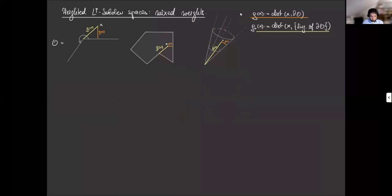And what we came up with are weighted LP sobolev spaces with mixed weights based, as I said, on rho, which is the distance to the boundary, and rho naught, which is the distance to the set of singularities.